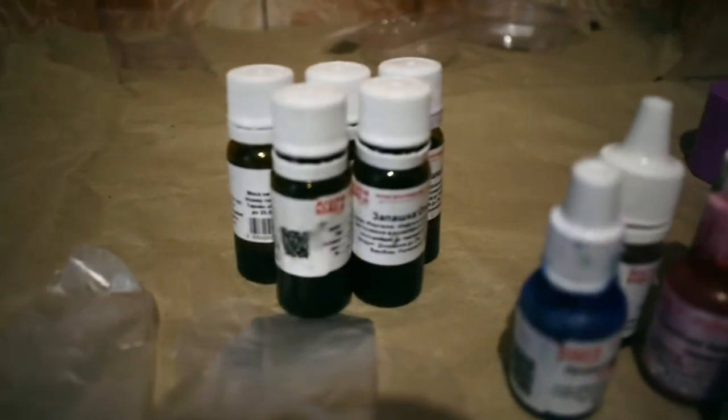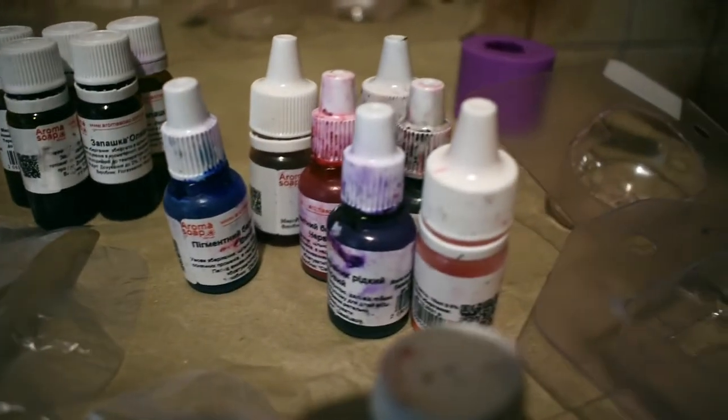I use silicone pumpkin mold and plastic molds for square and skull. I'll also be using black, orange, and blue pigments and several flavors.